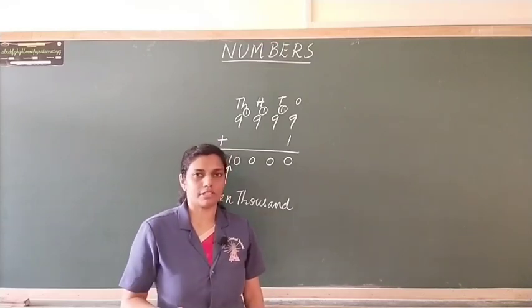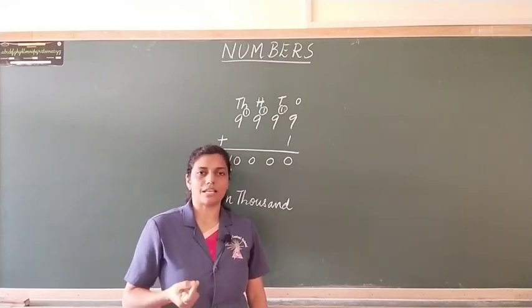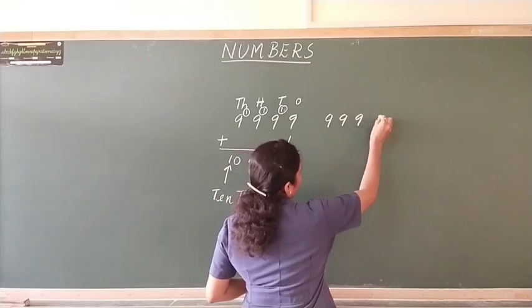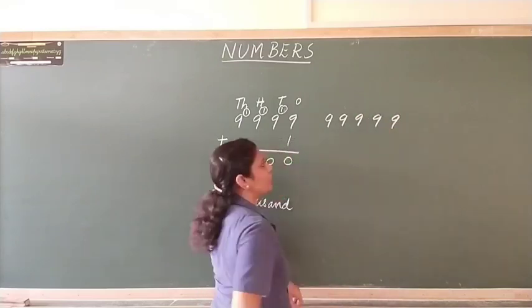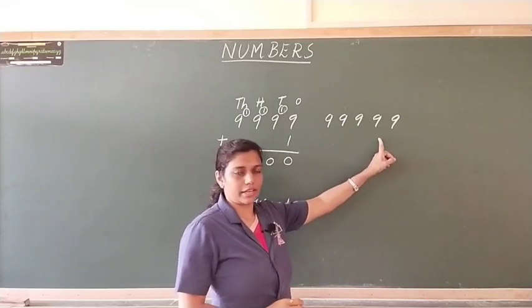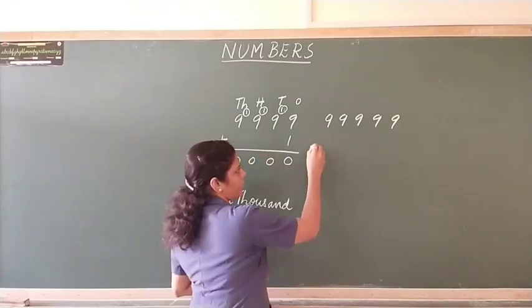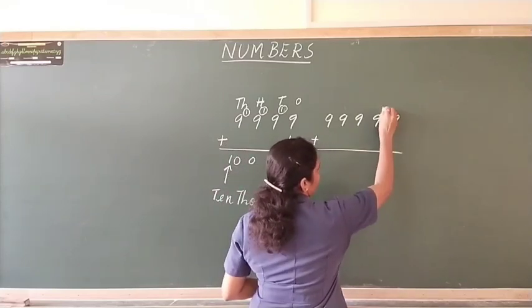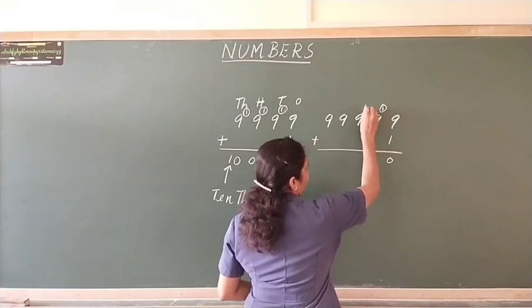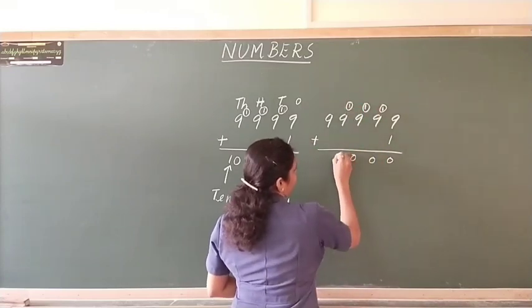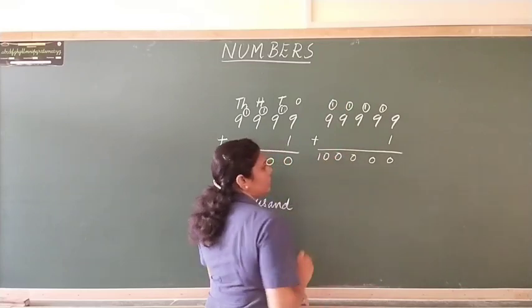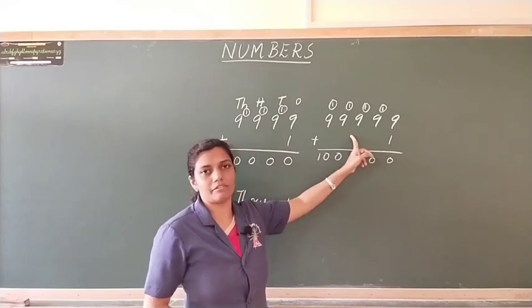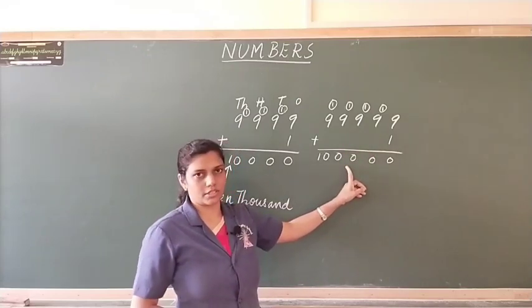So, what happens after this number? Let us add 1 to this and check. 99,999. I add 1 to this number. We get 10, 1 carry again. So, from the largest 5-digit number, when we add 1, we reach the smallest 6-digit number.